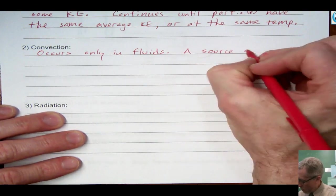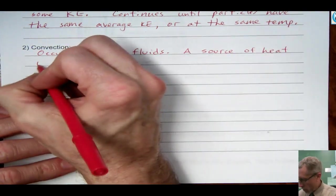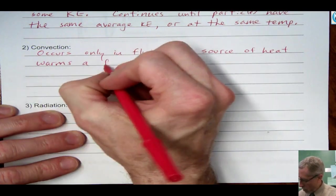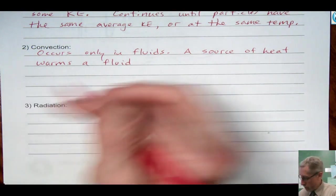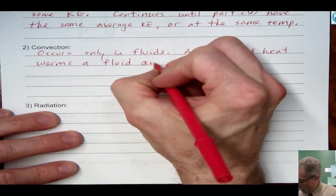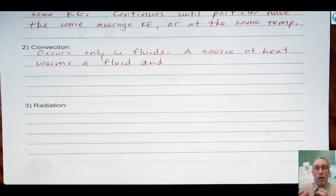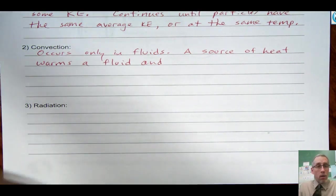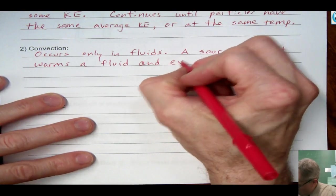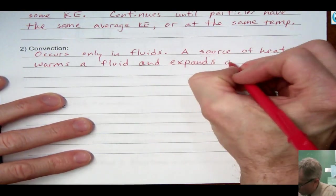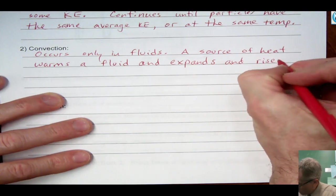So here's the process. A source of heat warms a fluid. So this might be, maybe you build a fire. And the fire will warm up the air that's close to the fire. And what happens when a fluid gets warm? Well, here's what we know. Those particles start to move a little faster. And therefore, the fluid itself kind of expands a little bit. And as it expands, it becomes less dense and it will rise upwards. So that's sort of the process. It expands and rises up.